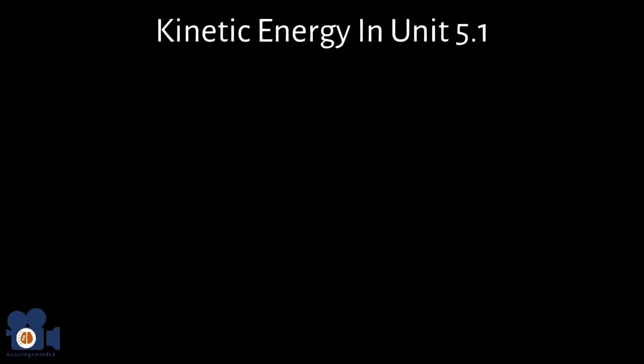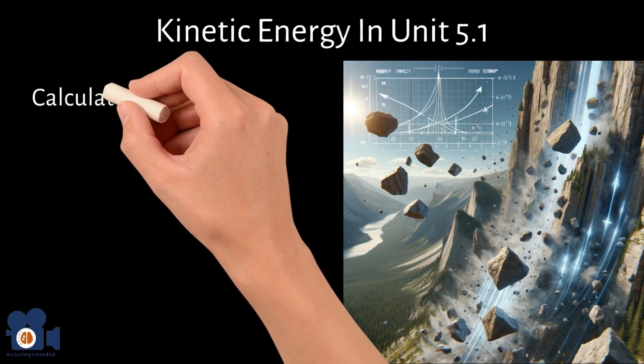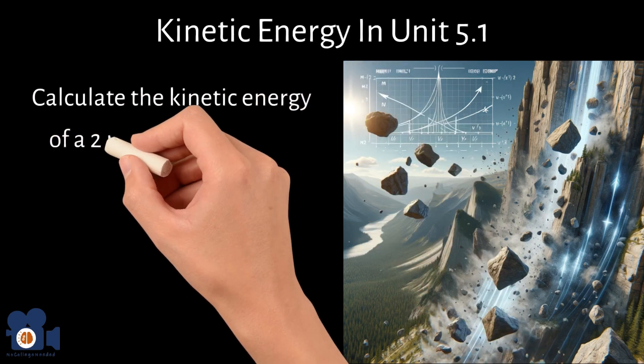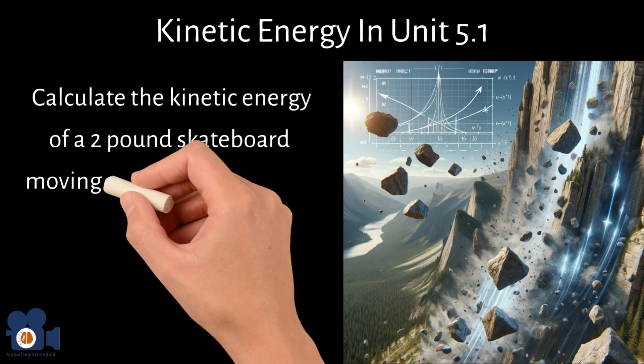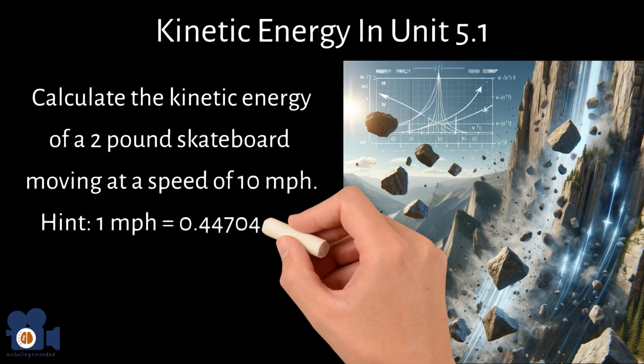With kinetic energy in unit 5.1, calculate the kinetic energy of a 2-pound skateboard moving at the speed of 10 miles per hour. Hint, 1 mile per hour is 0.44704 meters per second.